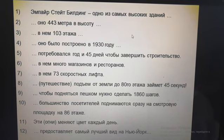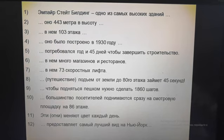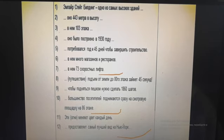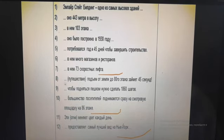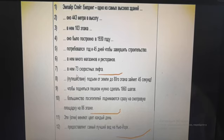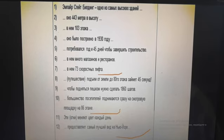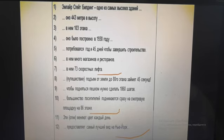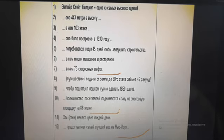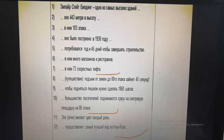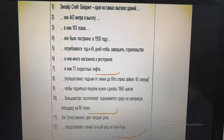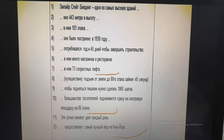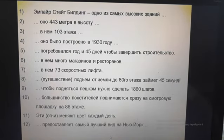For example: 'It is 443 meters high.' You have options: if you have option 3, you work with the first 7 sentences; option 4 requires the first 10 sentences; and for a grade of 5, you translate all sentences. You can choose 7, 10, or 12 sentences as you wish. All sentences are from the text.